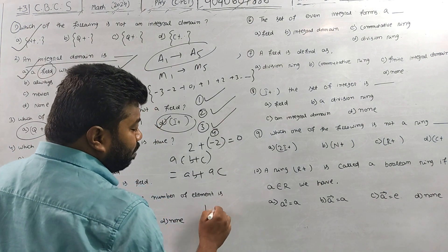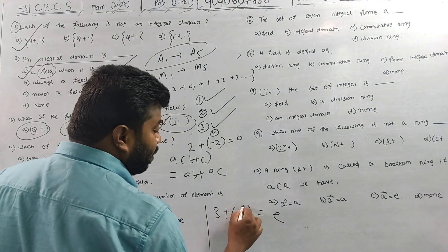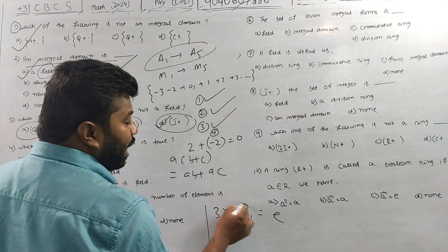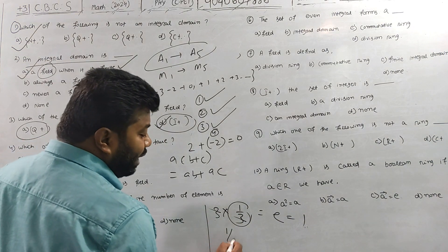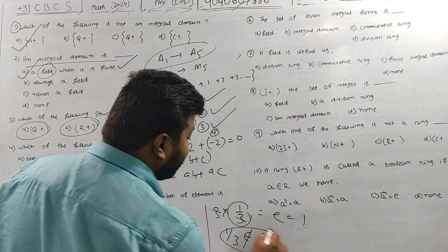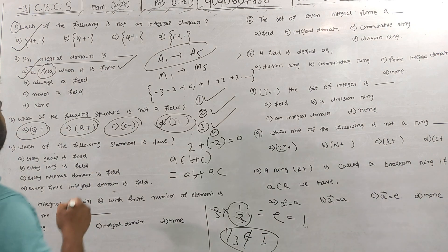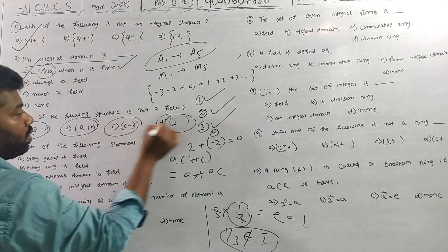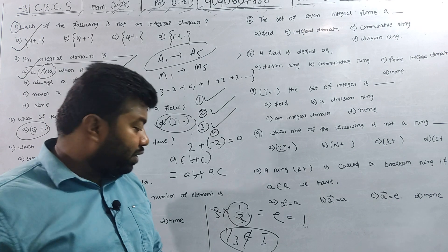However, the multiplicative inverse property fails. For example, the element 3: to satisfy the inverse, we need 3 × (1/3) = 1, but 1/3 does not belong to the set of integers I. So the multiplicative inverse does not exist in I.